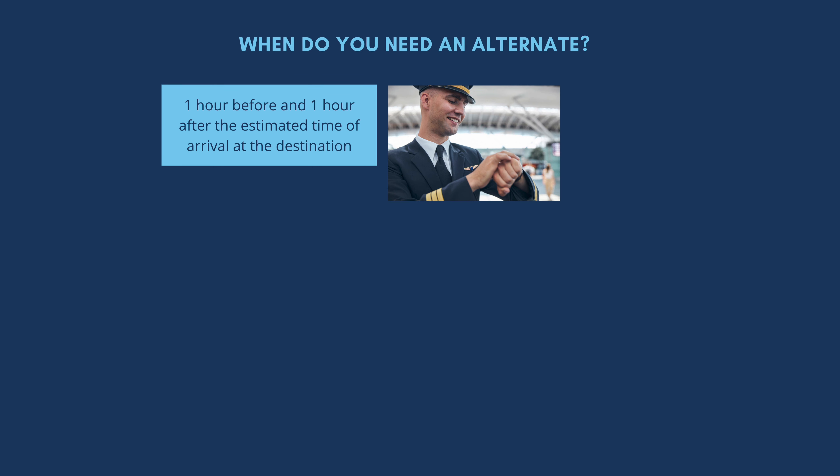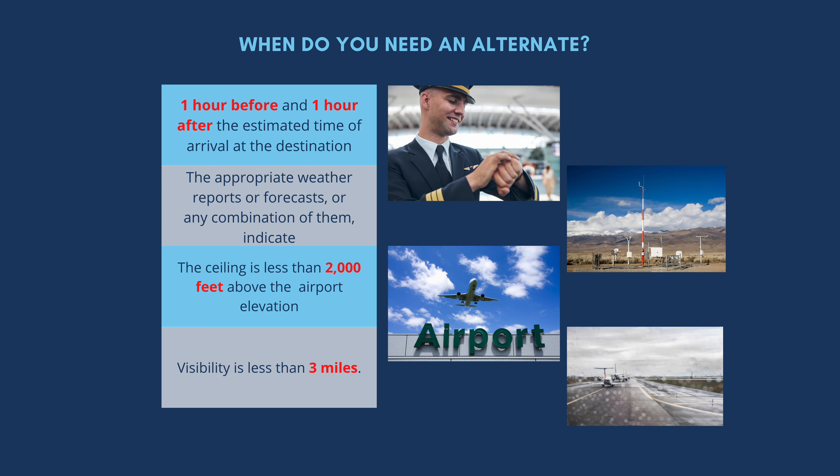Or the visibility is less than three miles — you will need an alternate. For the interview, just give a quick answer: one hour before to one hour after, ceiling less than 2,000 feet, and visibility less than three miles. Don't go into anything else; that's all you need to answer.